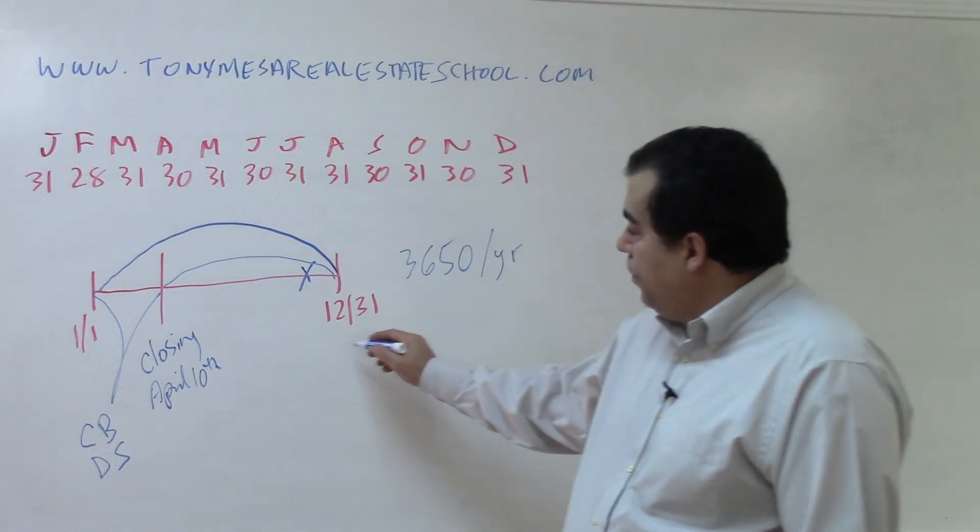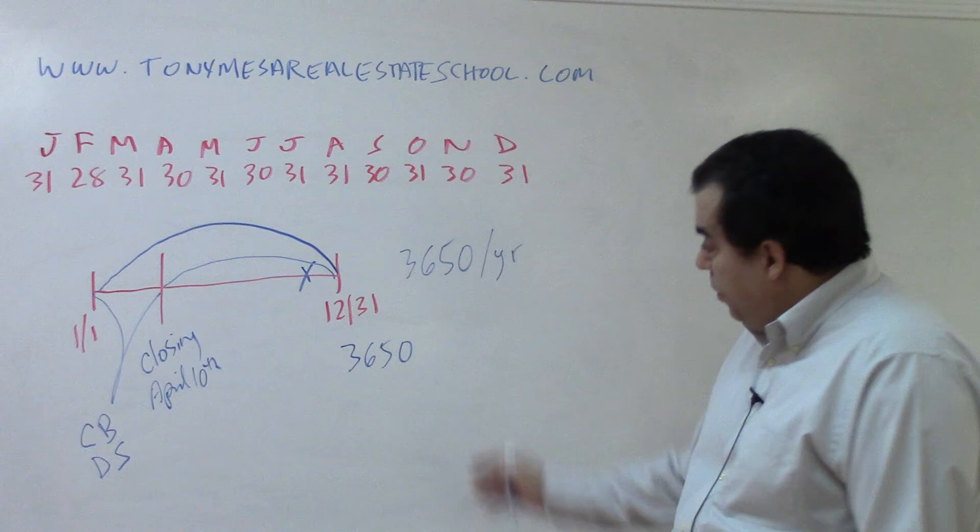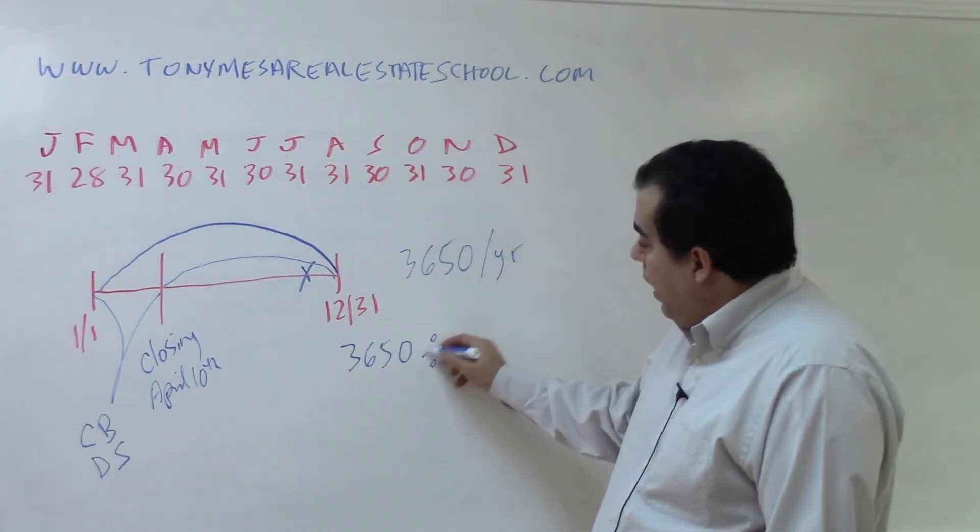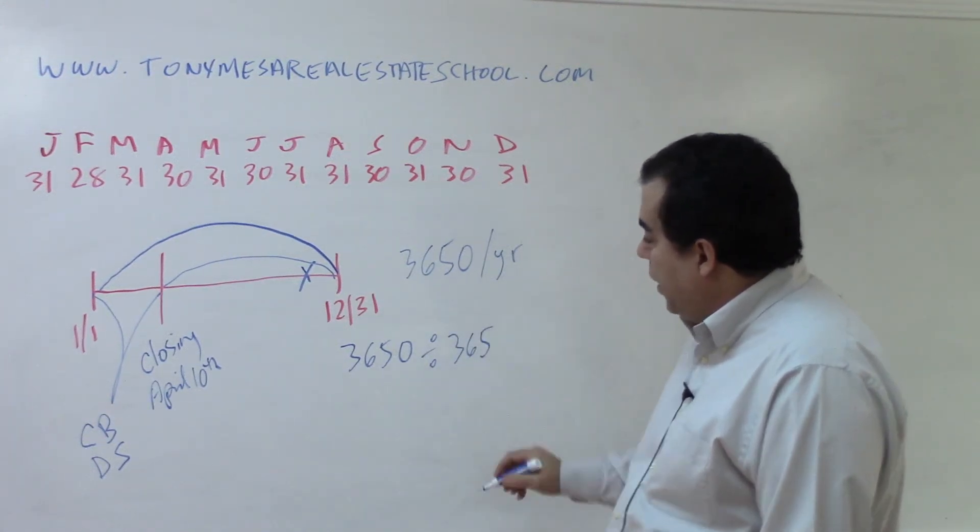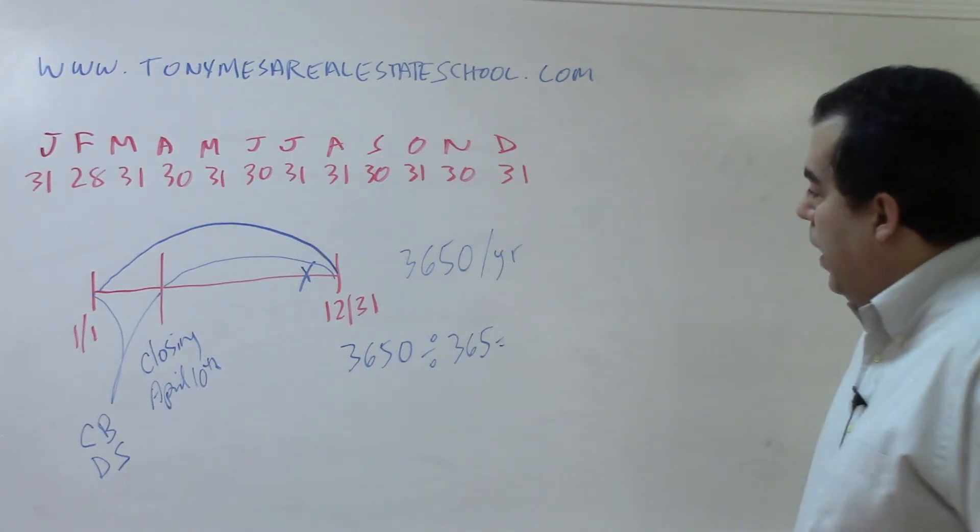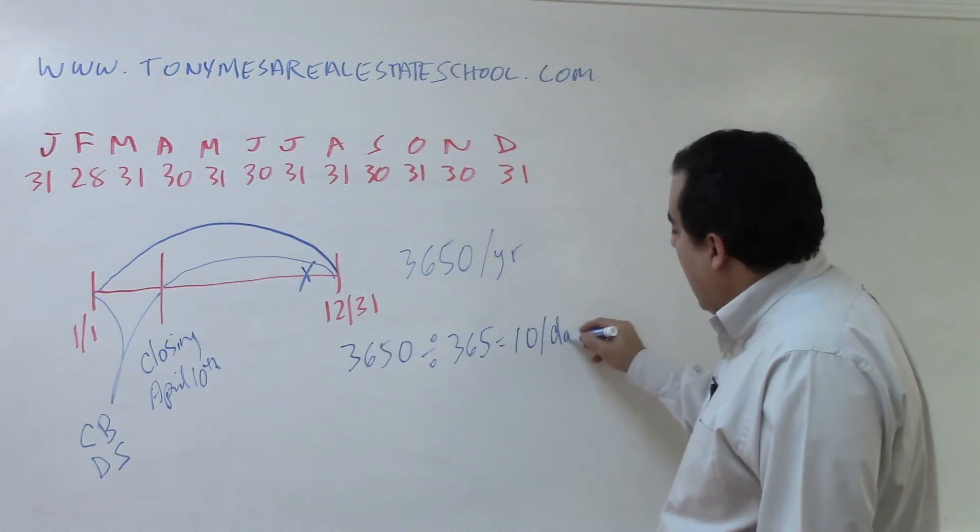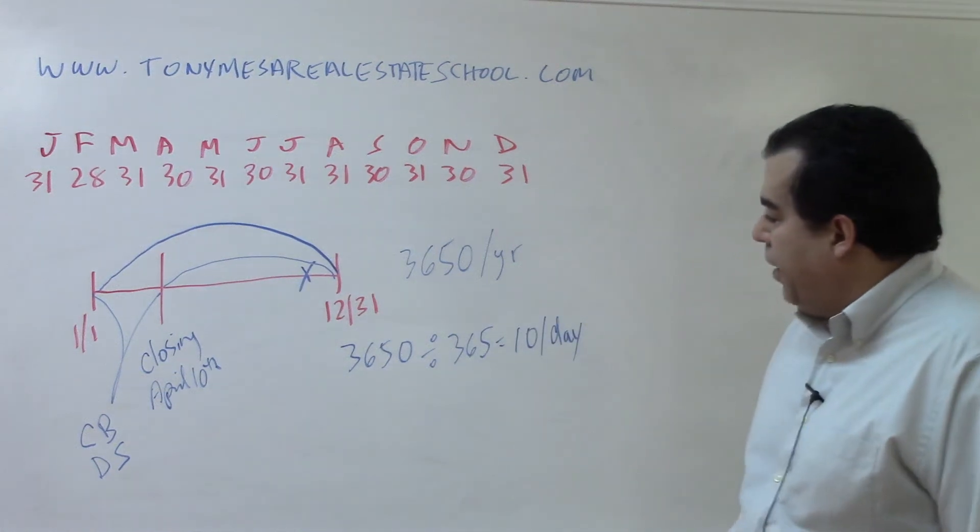The first thing that you need to do is you take $3,650, that's the tax for the year, divided by 365 days in a year. So a year has 365 days in it. And using my calculator, that is $10 in tax per day.